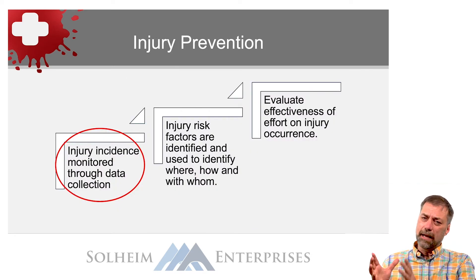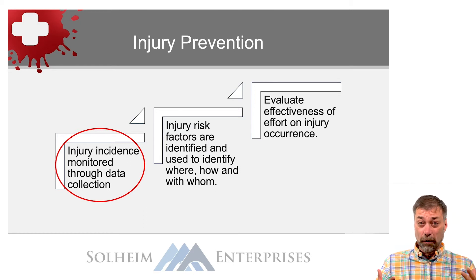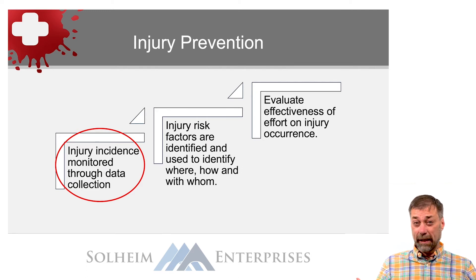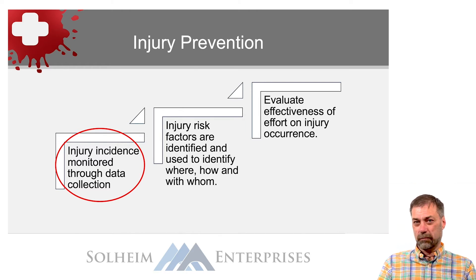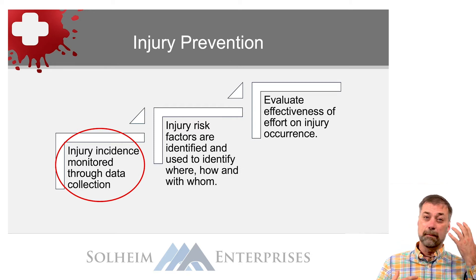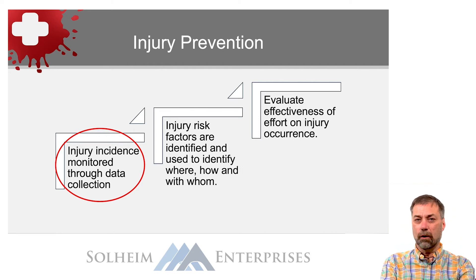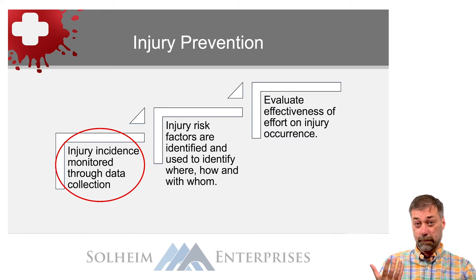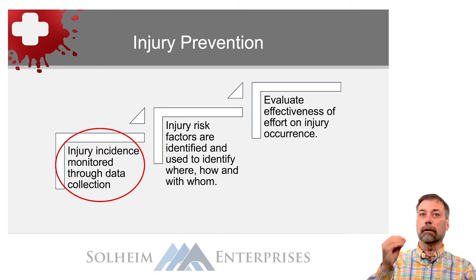There are basically three steps to an injury prevention program. The first is determining what type of injury prevention program you're going to design. That's going to mean looking at the data for your community and deciding what types of injuries occur most frequently. You're going to want to look at the costs associated with those traumas, the death rates, the injury rates, and the amount of money spent. We're only going to have a limited amount of money available and you need to make sure you pick the injuries that are going to have the greatest impact and get the greatest bang for your buck.